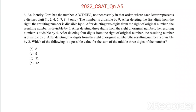Question number 5. An identity card has the number A, B, C, D, E, F, G — not necessarily in that order — where each letter represents a distinct digit: 1, 2, 4, 5, 7, 8, 9 only.